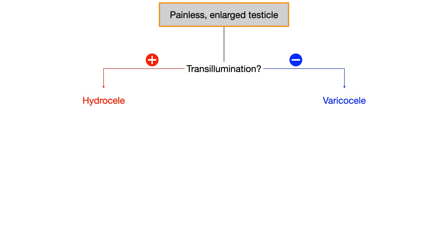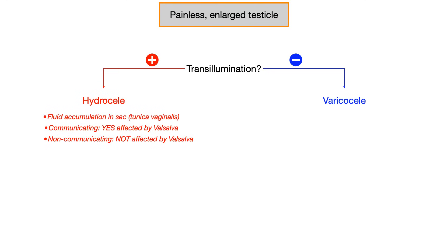In the question stem, focus on transillumination to figure out if the answer is hydrocele or varicocele. For a hydrocele, this is due to fluid accumulation in a sac around the testicle, and that sac is actually derived from the tunica vaginalis.